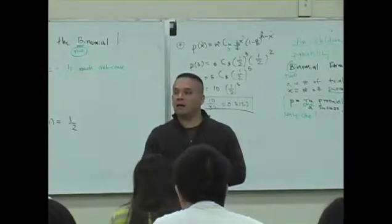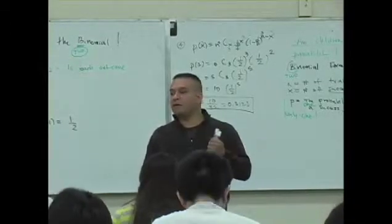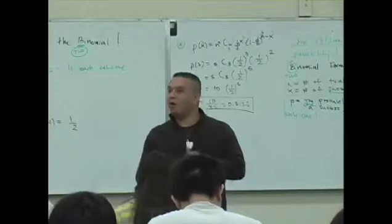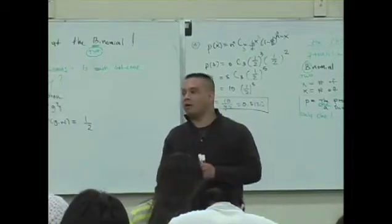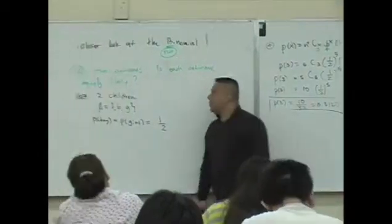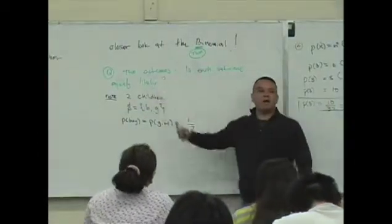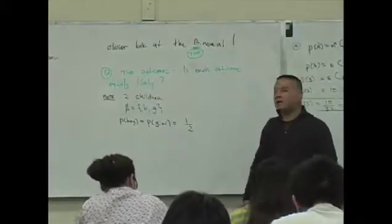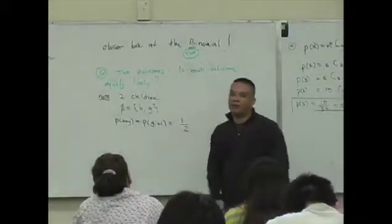You pick a number from one to ten, the likelihood you pick a four is the same as the likelihood you pick a seven, or a nine, or a two, or a one. It's all one-tenth. So here, I'm saying this to you. Just because you have two outcomes, does that always guarantee that those outcomes are equally likely? What do you think?